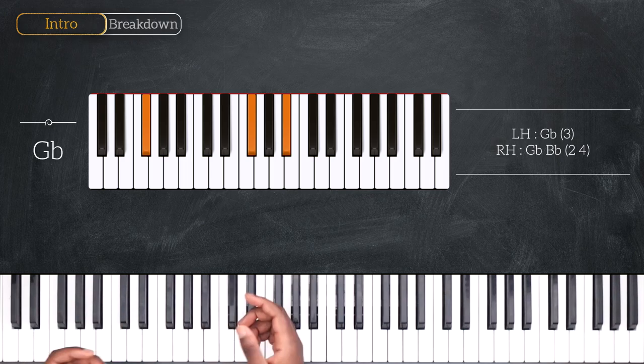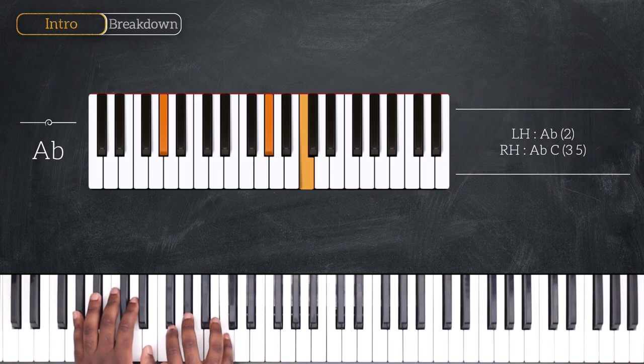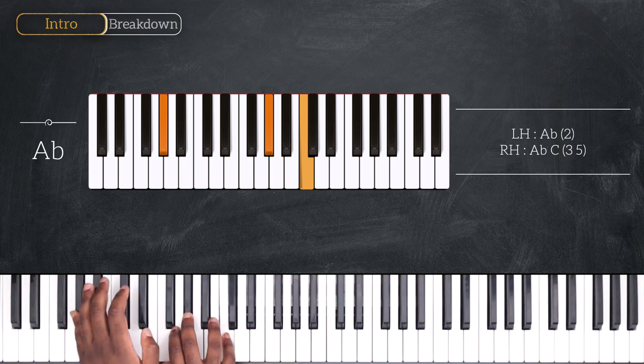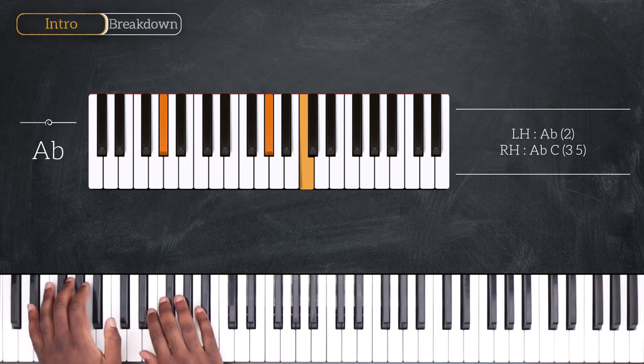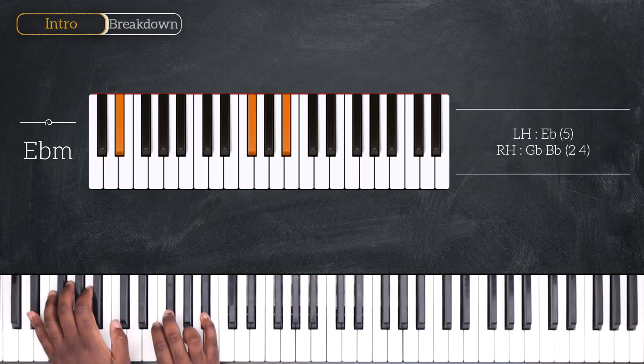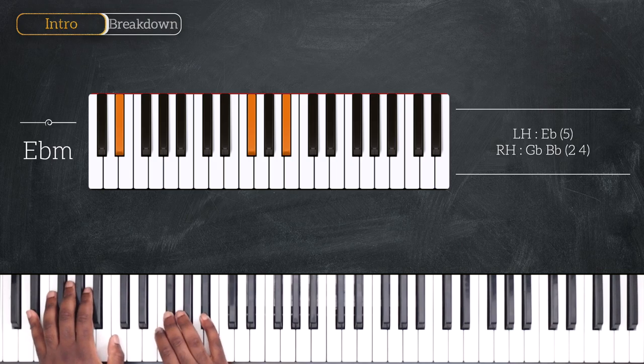Moving up again by one whole step, this time on Ab. Ab, Ab and C. Going down on the two chord, Eb minor. Eb, Gb, Bb.